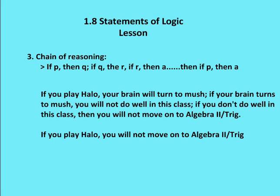Let's take an example. If you play Halo — that's the game on the Xbox — your brain will turn to mush. If your brain turns to mush, you will not do well in this class. If you don't do well in this class, then you will not move on to higher levels of math or algebra 2 trig. So using chain of reasoning: the initial hypothesis is 'if you play Halo,' the conclusion is 'your brain will turn to mush.' Then 'if your brain turns to mush,' the conclusion is 'you will not do well in class.' Then 'if you don't do well in class,' the final conclusion is 'you will not move on to algebra 2 trig.' Linking all of those together, through chain of reasoning: if you play Halo, then you will not move on to algebra 2 trig.